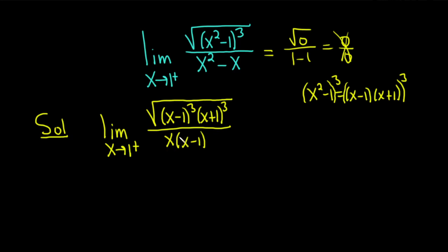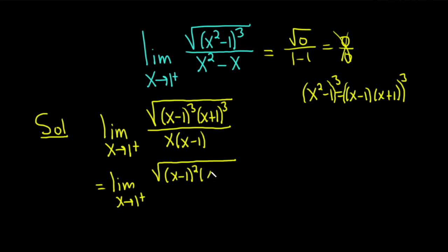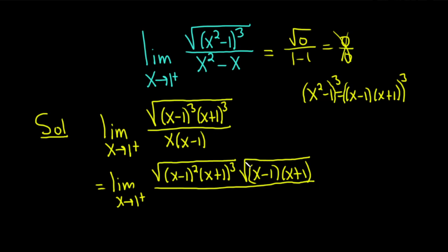Our goal is to cancel this x minus 1, but we need to be careful because we need to get rid of the square root — that's where this one-sided limit comes into play. So this is equal to the limit as x approaches 1 from the right. We can write it as the square root of x minus 1 squared times x plus 1 cubed, times the square root of x minus 1 times x plus 1, all divided by x times x minus 1. This works because x minus 1 times x minus 1 squared gives x minus 1 cubed, and likewise x plus 1 to the first times x plus 1 squared gives x plus 1 cubed.